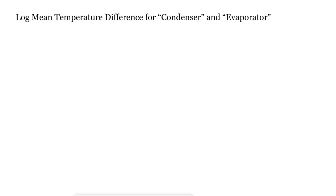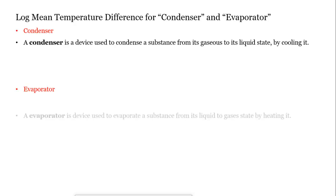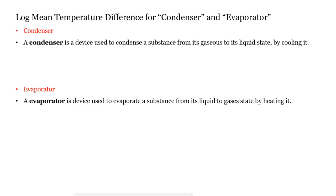Before that, we understand what is meant by condenser and evaporator. A condenser is a device used to condense a substance from its gaseous to liquid state by cooling it. An evaporator is a device used to evaporate a substance from its liquid to gaseous state by heating it.